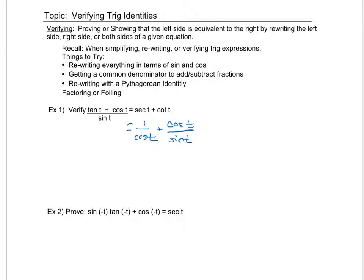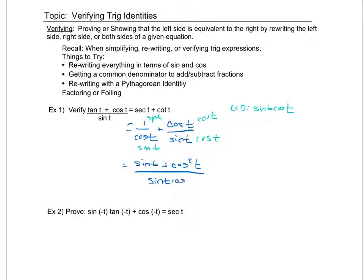Now that I have that in terms of sines and cosines, I'm going to try to get a common denominator so that I can put these together. I need to multiply the first fraction by sine t over sine t, and the second by cosine t over cosine t, in order to get a least common denominator of sine t cosine t. Doing that, I now have sine of t plus cosine squared t, all over sine t cosine t.